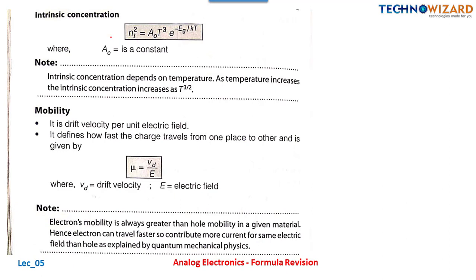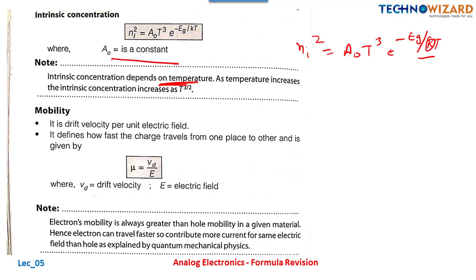The intrinsic concentration formula can also be written as: ni² = A₀ · T³ · e^(−Eg₀/kT), where A₀ is a constant, Eg is the energy gap, k is the Boltzmann constant, and T is temperature. Intrinsic concentration depends upon temperature — as temperature increases, the intrinsic concentration increases by T^(3/2).